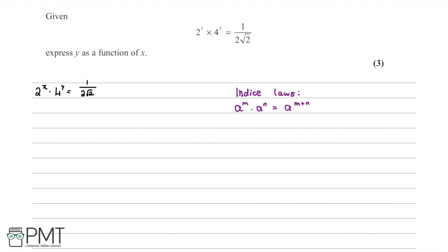Looking at what we have, we see that we have 2x and 4y. If we keep our 2x, we know that 2 squared is going to equal 4, so we can write 4y as 2 to the power of 2y — these two things are equivalent. Then we're going to write 1 over 2 root 2 in a different form.